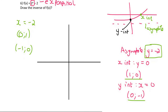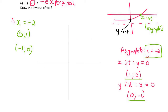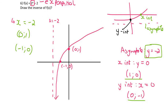Now draw the inverse. Start with the asymptote x = −2, which is a vertical line. Plot (0, 1) and (−1, 0), then draw the curve. This is actually a log graph. That's it for number six.